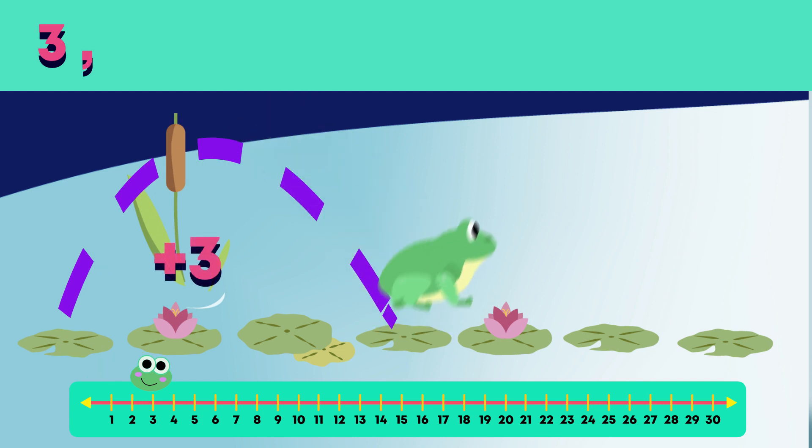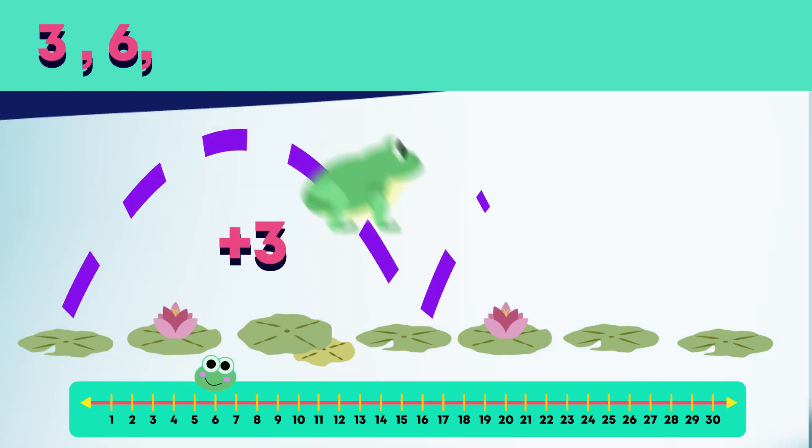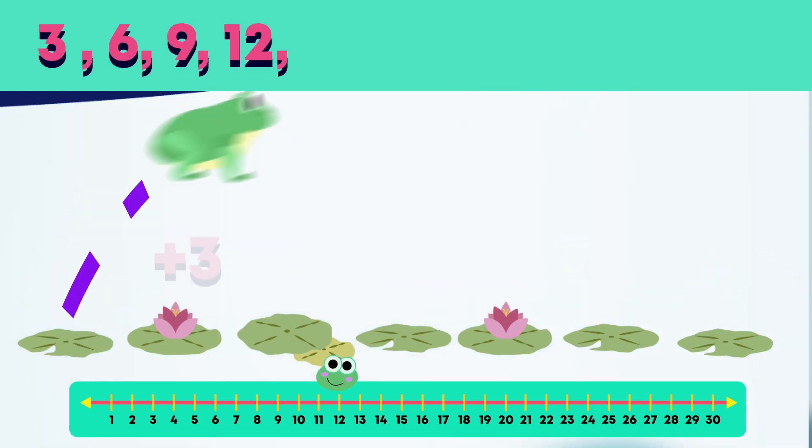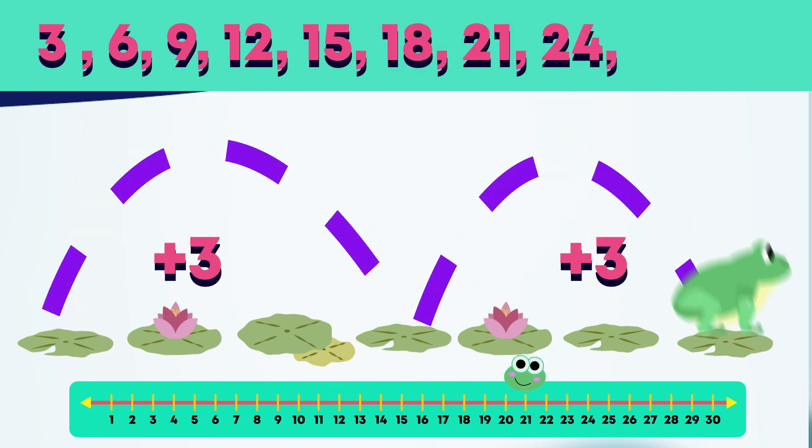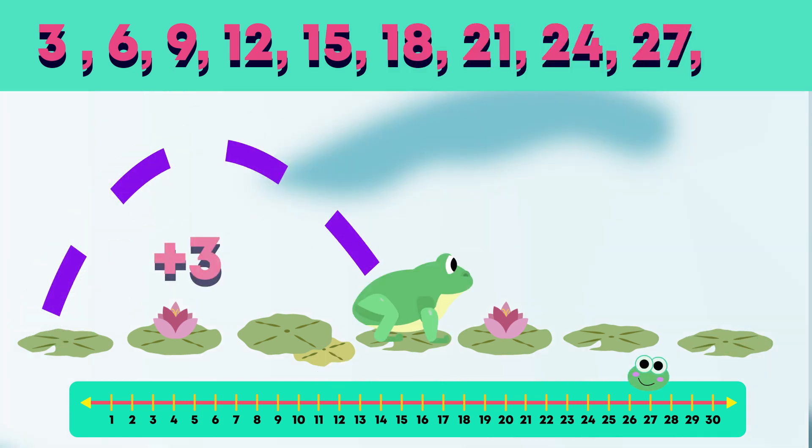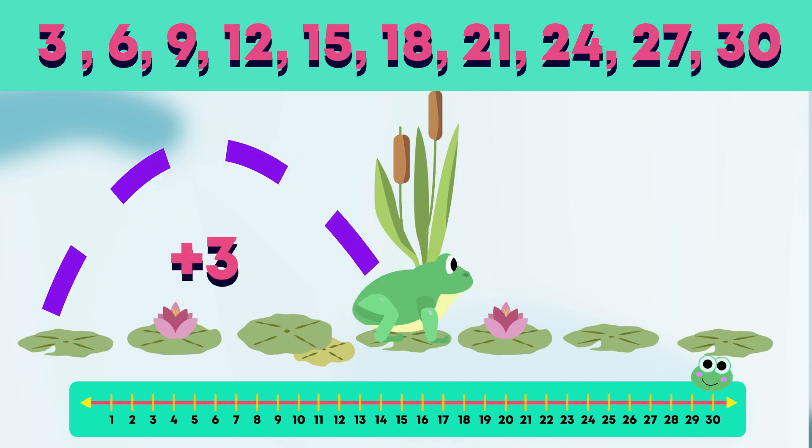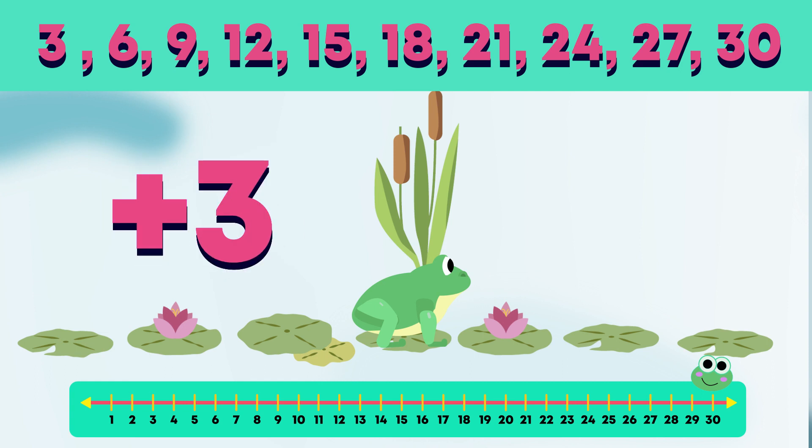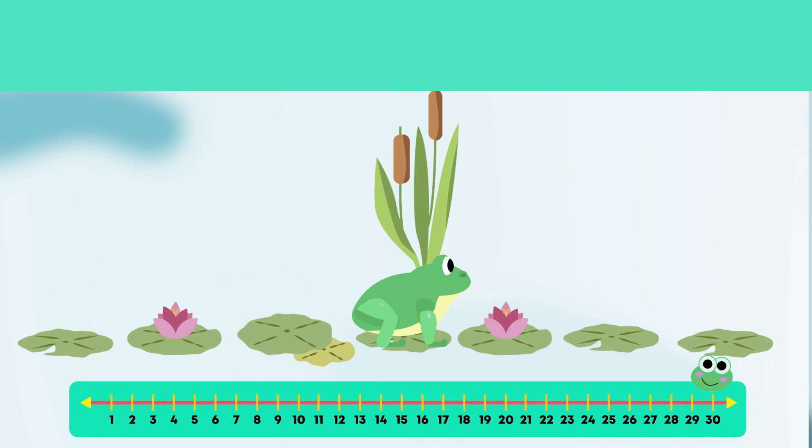3, 6, 9, 12, 15, 18, 21, 24, 27, 30. As we count forwards in 3s, we add 3 more each time. The numbers get bigger. Let's try singing these multiples of 3.